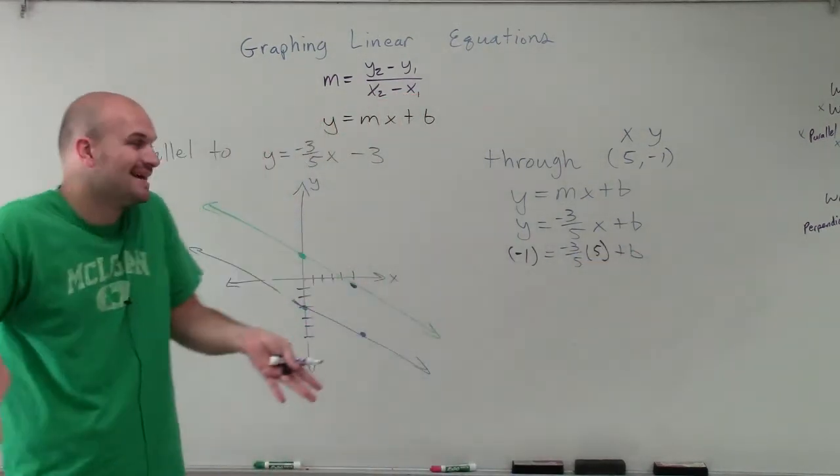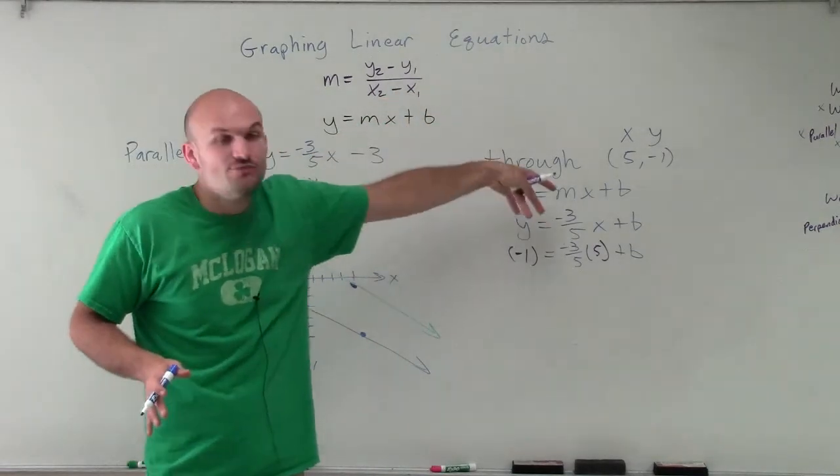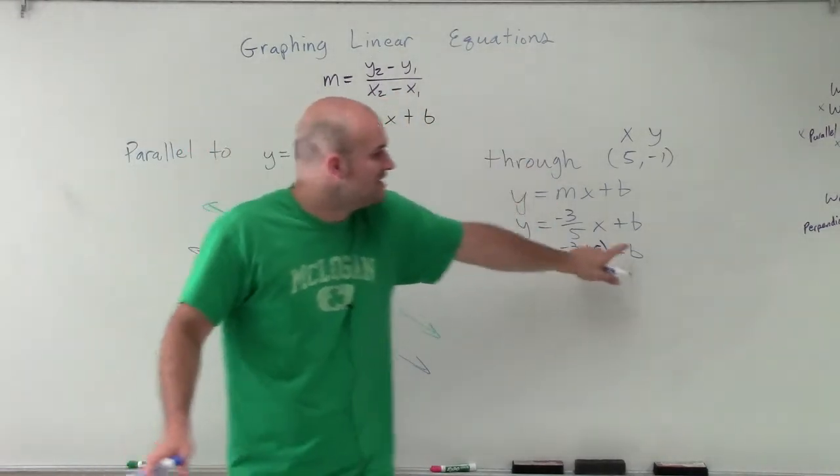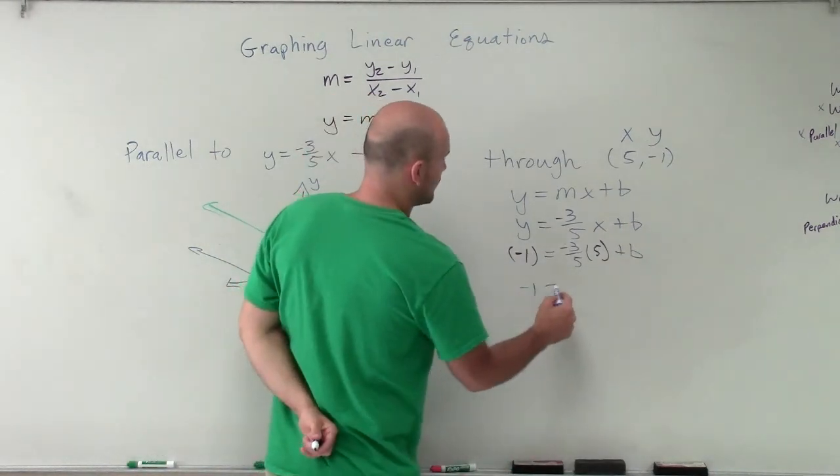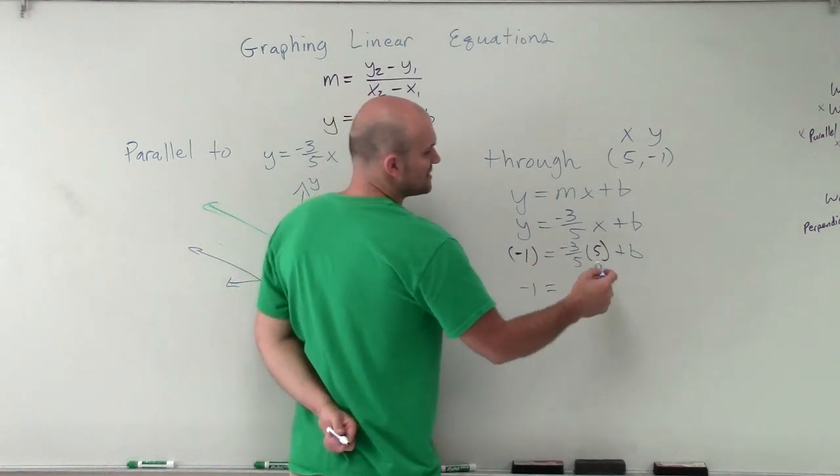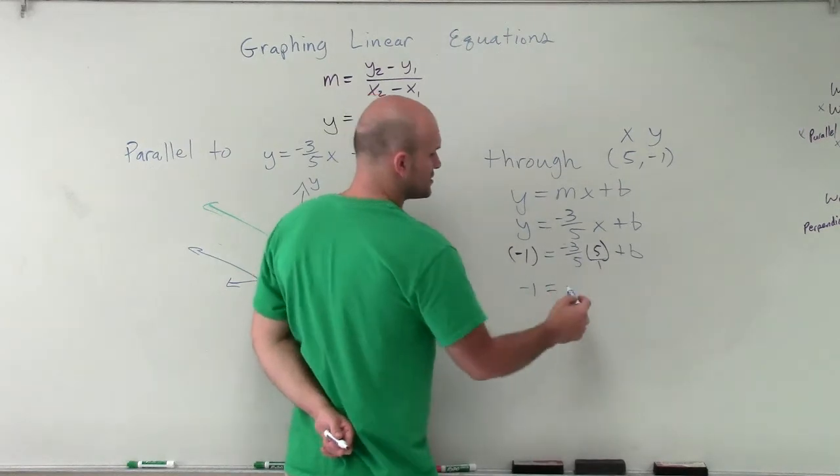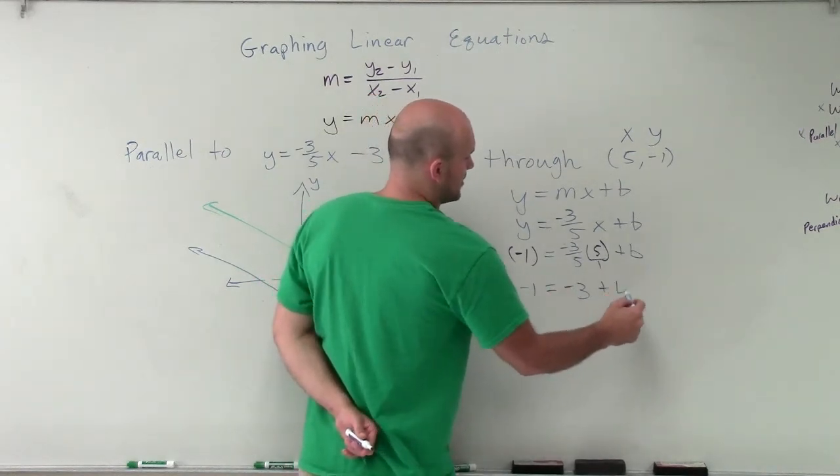So I plug in my x and y coordinates into my x and y variables into my equation to now find my new y-intercept. So this becomes negative 1 equals negative 3 fifths times 5. That's really 5 over 1. It's just going to leave us with negative 3 plus b.